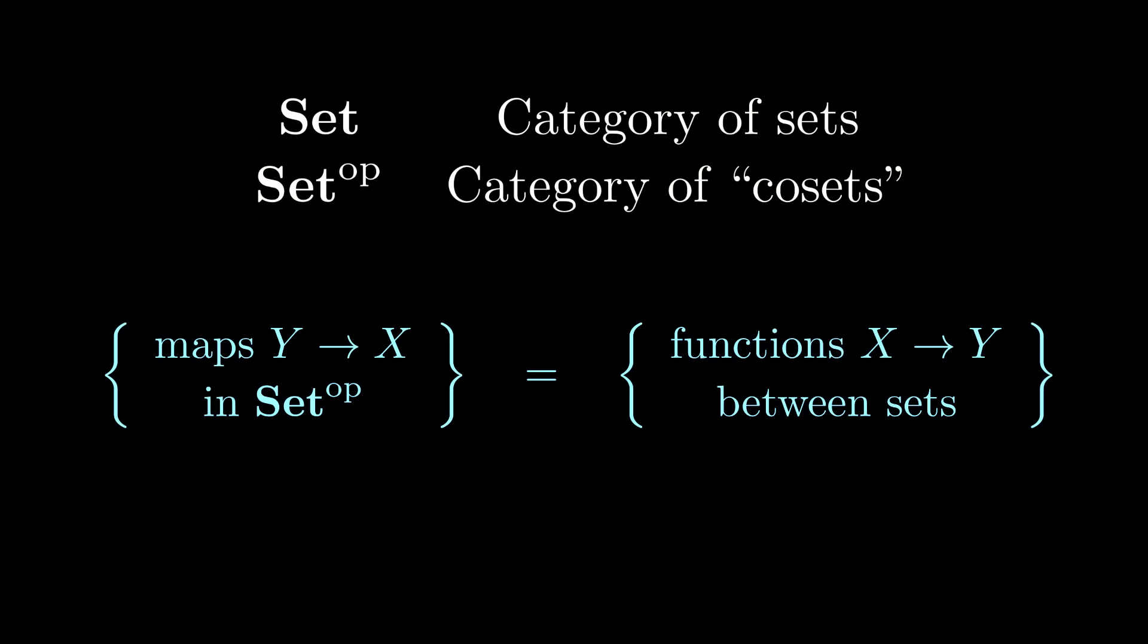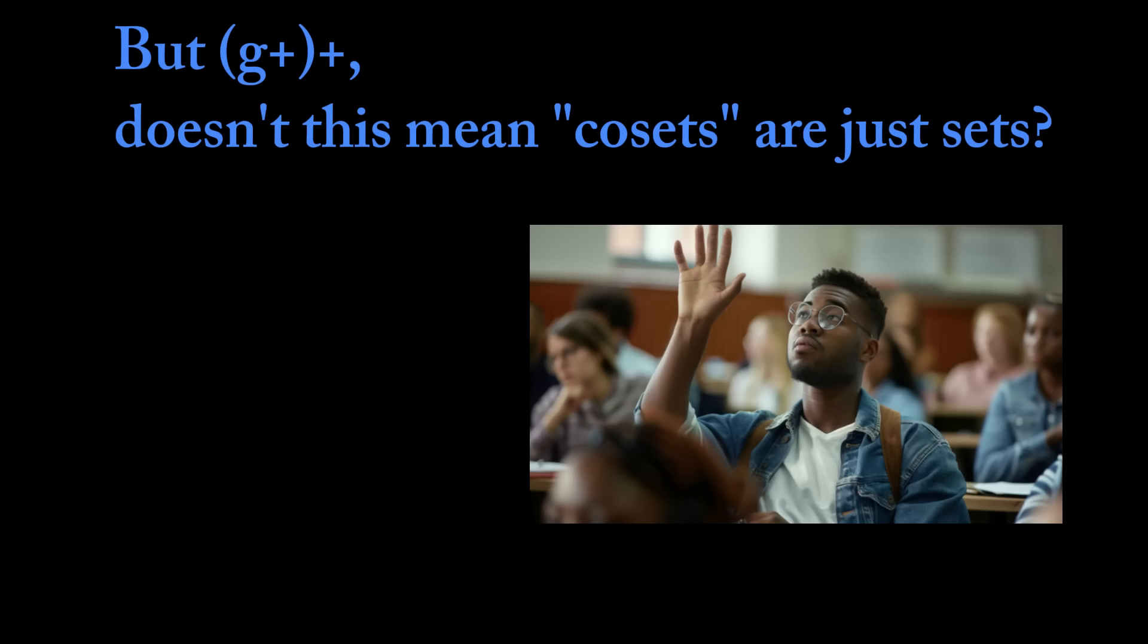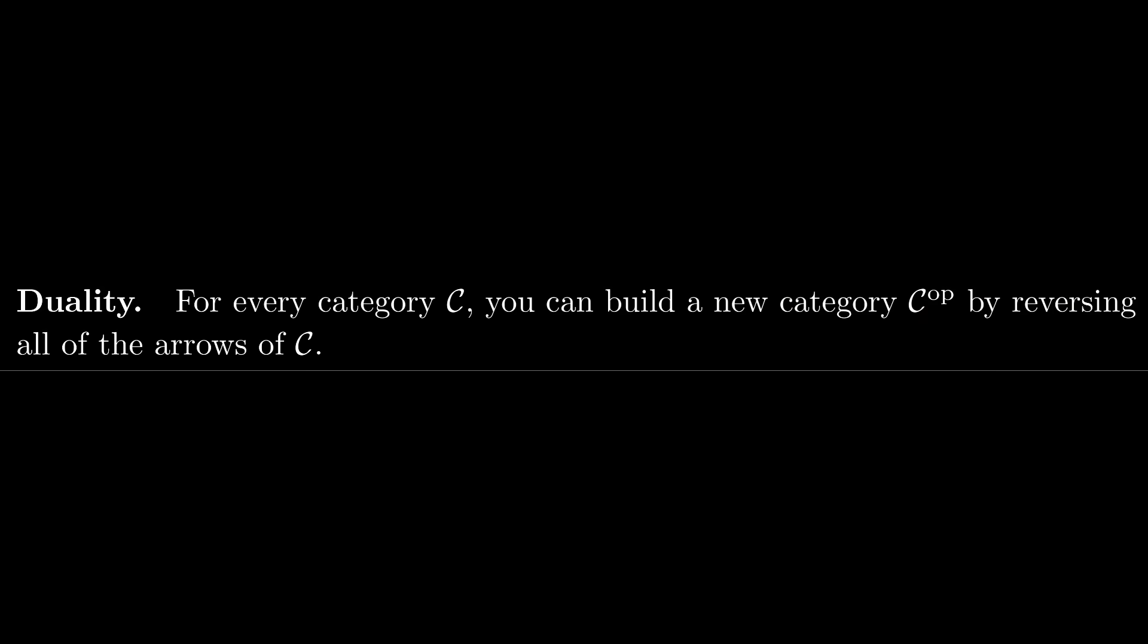By performing these abstract gymnastic techniques on the large category of sets, we obtain the mysterious category of cosets, wherein a map from Y to X is a function from X to Y of the underlying sets. But gee, I hear you say. Doesn't this mean that our new cosets are just sets? We've only changed the direction of the maps between them, and the objects are the same as before. While it would certainly seem that way, we need to remember that the objects of a category are really just points. The implied structure and form of these objects are determined by the maps between them.